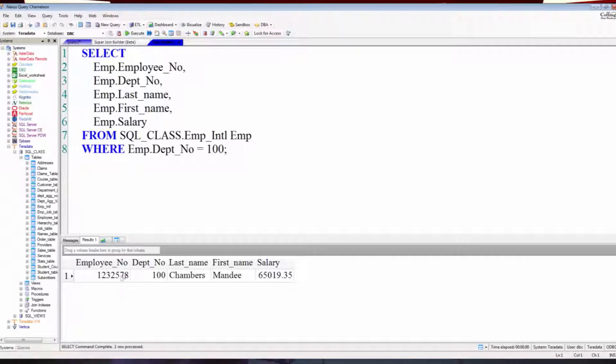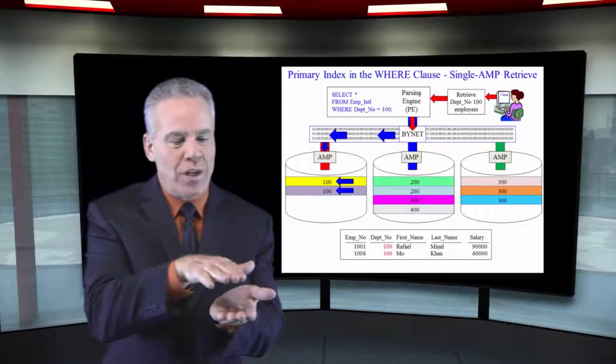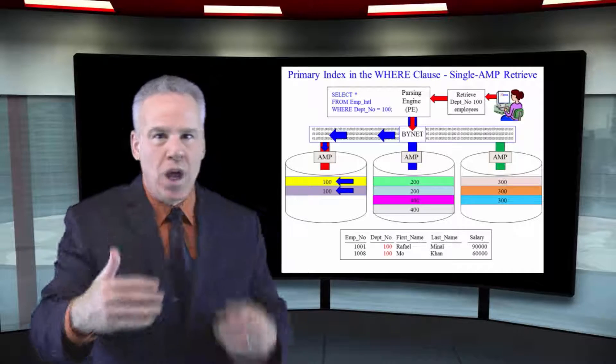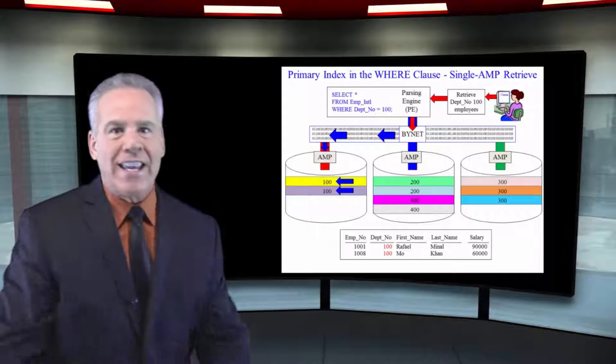So where a unique primary index is always returning one row, a non-unique primary index might return one or more rows. But they're all on the same AMP and they actually have been sorted to be grouped together. What a nice design. UPI, NUPI in the WHERE clause, single AMP retrieve one second every time.